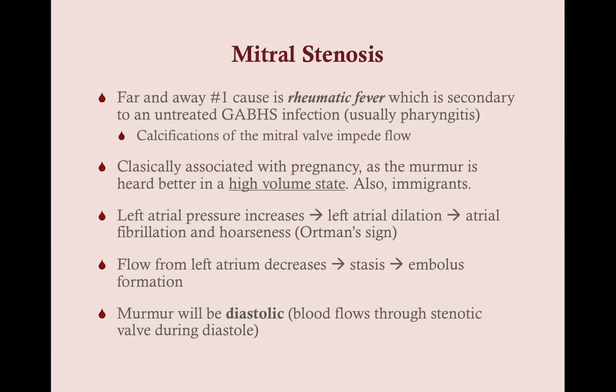The left atrial pressure increases because blood can't be pumped properly through the mitral valve, causing left atrial hypertrophy and dilation. Because the left atrium increases in size but the conduction system doesn't change with it, you get electromechanical dissociation, which causes atrial fibrillation. The left atrium is in the most posterior position of the heart, and when it dilates it can impede on the left recurrent laryngeal nerve, causing hoarseness — known as Ortner's sign.